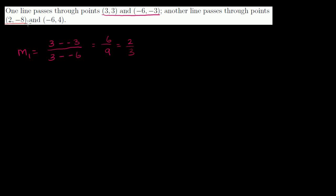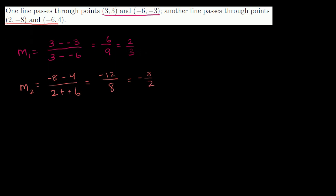What is the second line's slope? We get negative 8 minus 4 over 2 minus negative 6. Negative 8 minus 4 is negative 12. 2 minus negative 6 is the same as 2 plus 6. So it's negative 12 over 8, which — dividing numerator and denominator by 4 — is negative 3 halves. Notice: these are the negative inverses of each other. Negative 1 over (2/3) equals negative 1 times 3/2, which equals negative 3 halves. You swap the numerator and denominator and make it negative. So these two lines are perpendicular.